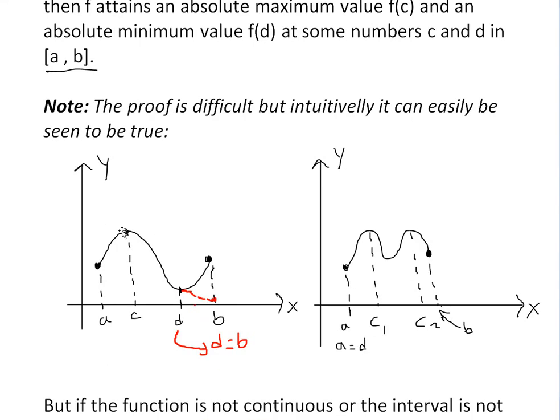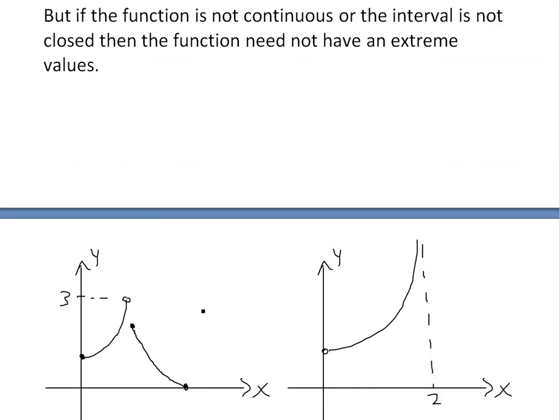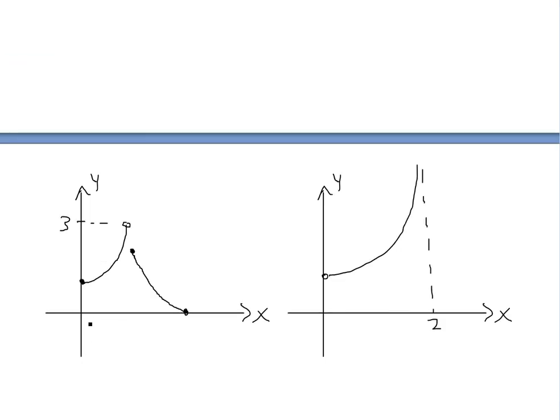So basically, this theorem is only when it's continuous and these intervals are closed. So, and here I've graphed out two examples where, let's say at this point is at a, and then this is the b right here.